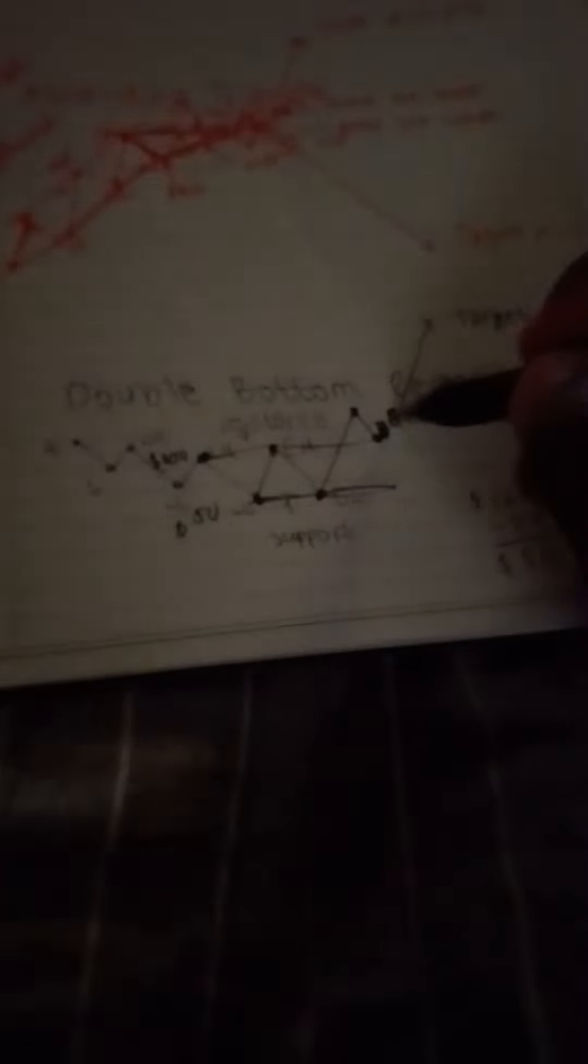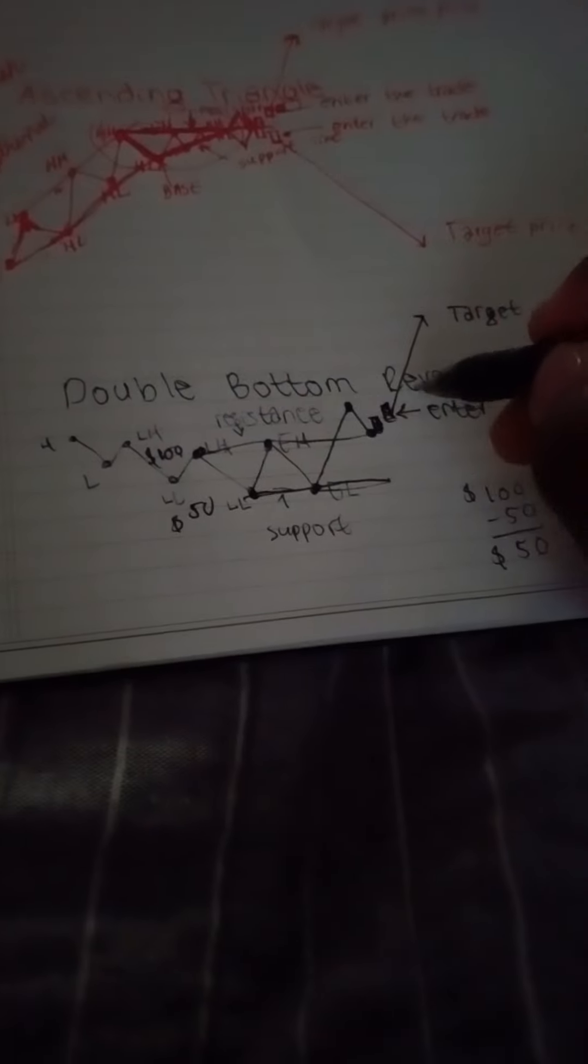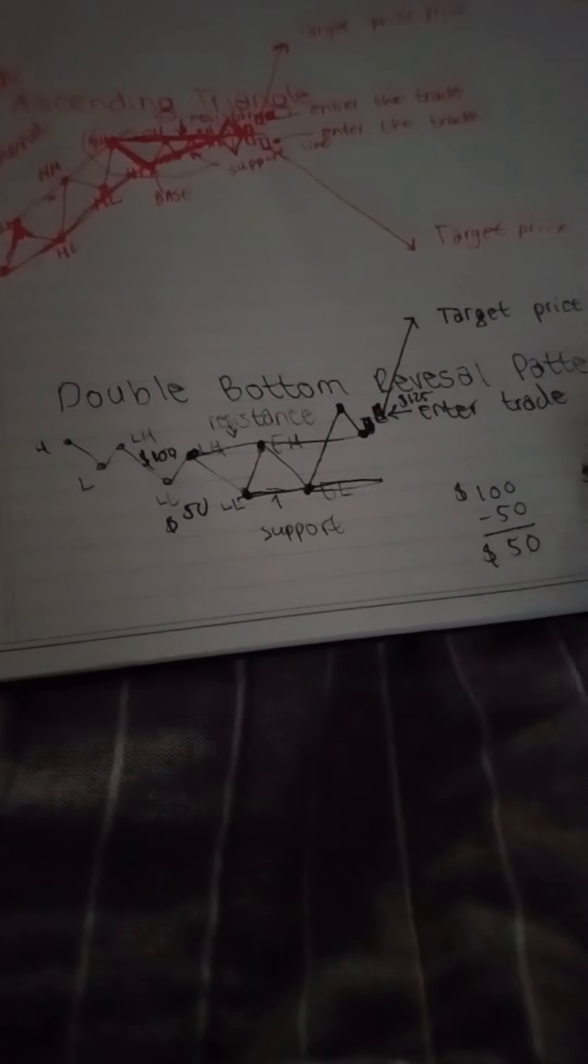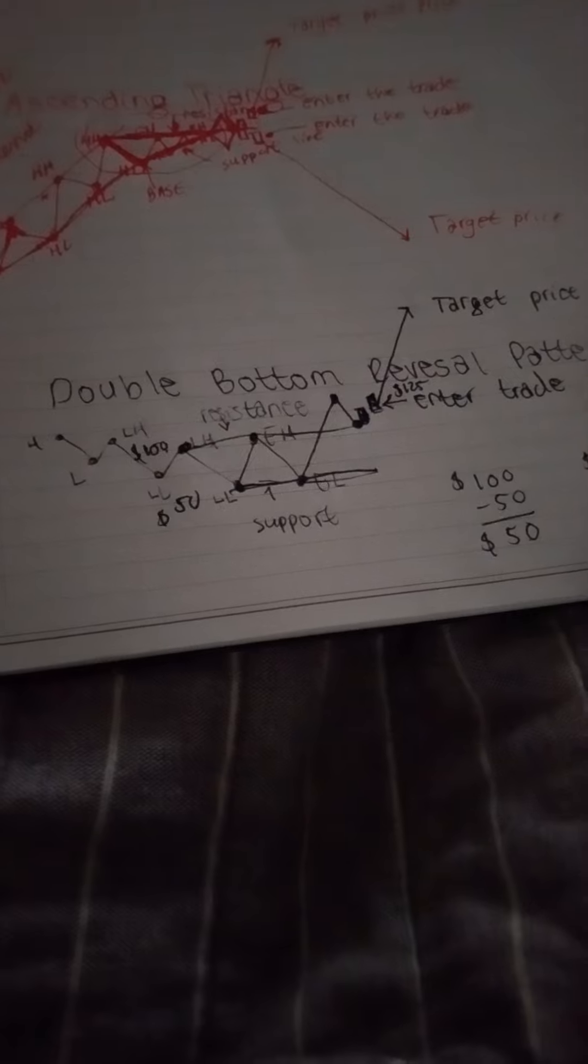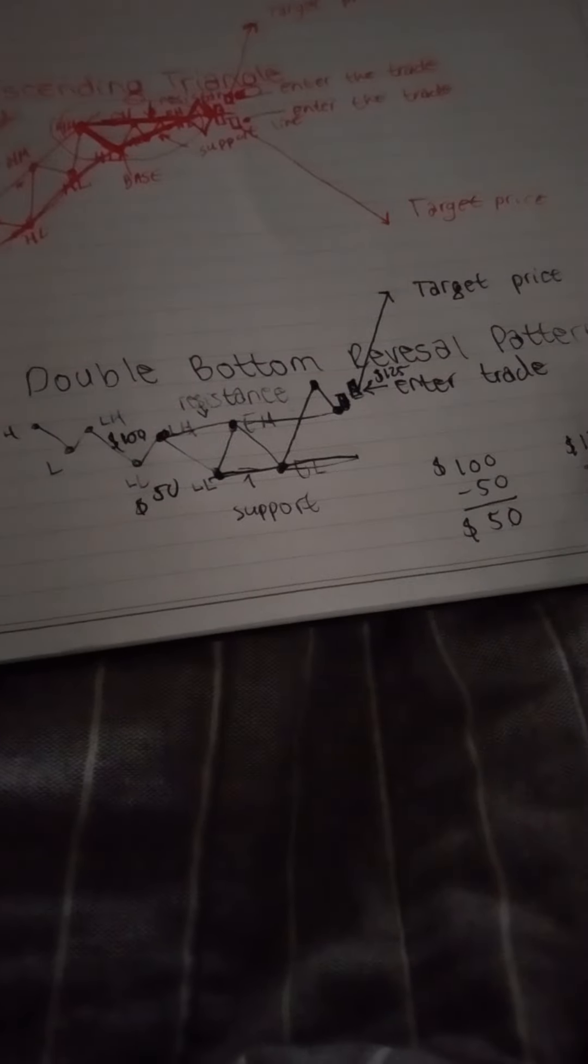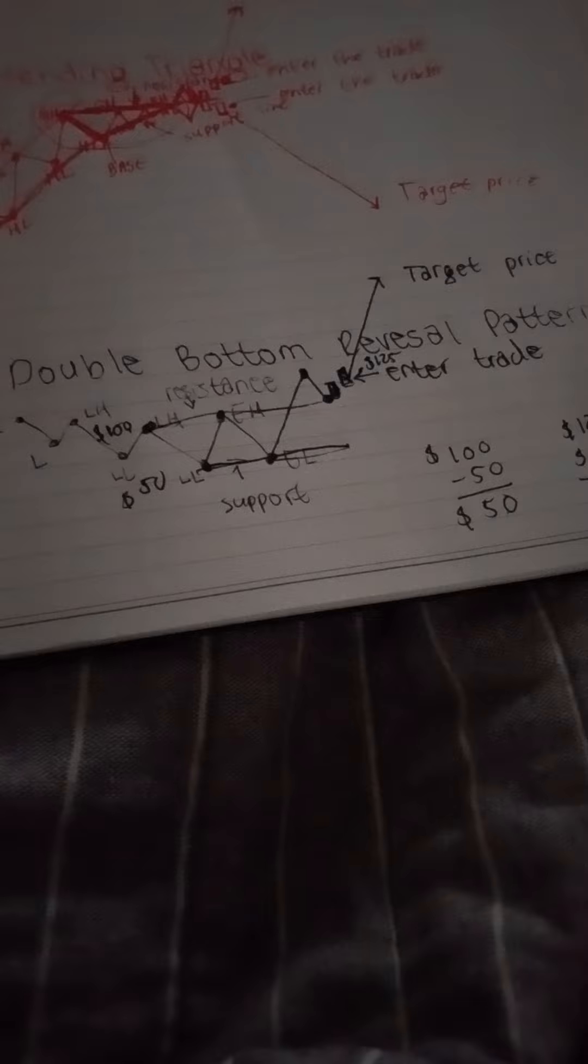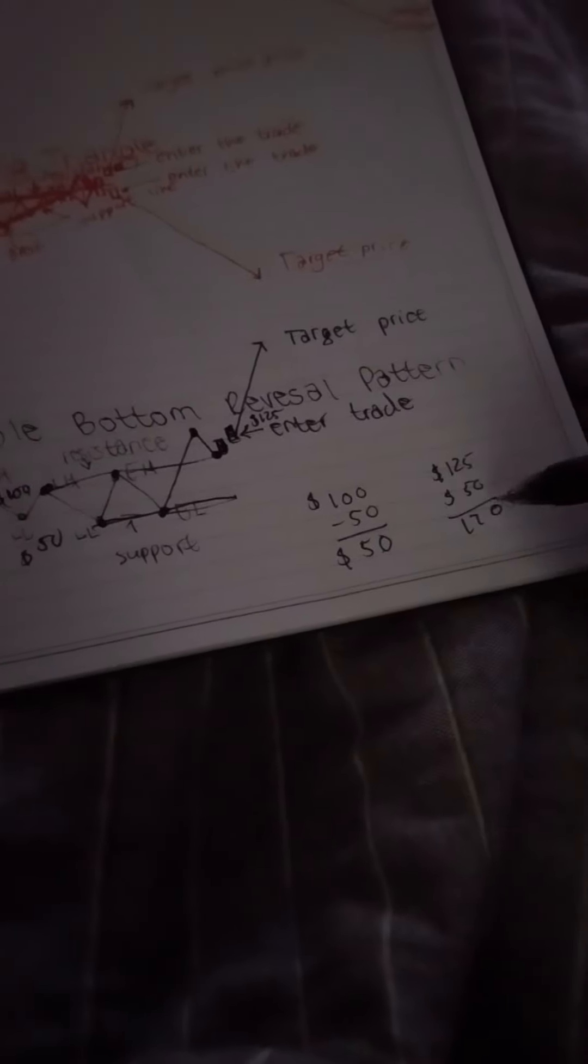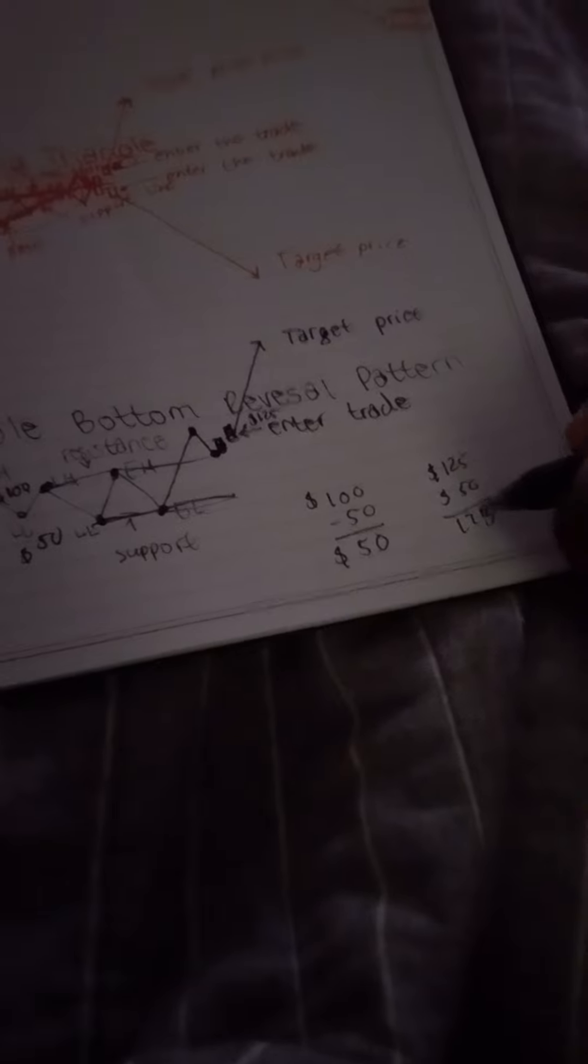And you would add this $50 to whatever the price is here. Let's say this is $125. So you would add $125 plus $50 equals $175.